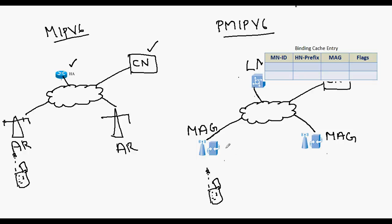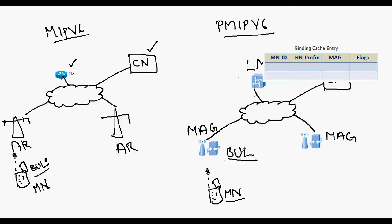The MAG also has a data structure called the binding update list. The major difference between Proxy Mobile IPv6 and Mobile IPv6 is this binding update list: in Mobile IPv6 it was maintained by the mobile node and contained details like care-of address, home address, refresh rate, and expiry time. In Proxy Mobile IPv6, the same binding update list is maintained by the mobile access gateway, with additional information such as the interface in the MAG to which the mobile node is connected and the local mobility anchor serving that mobile node.